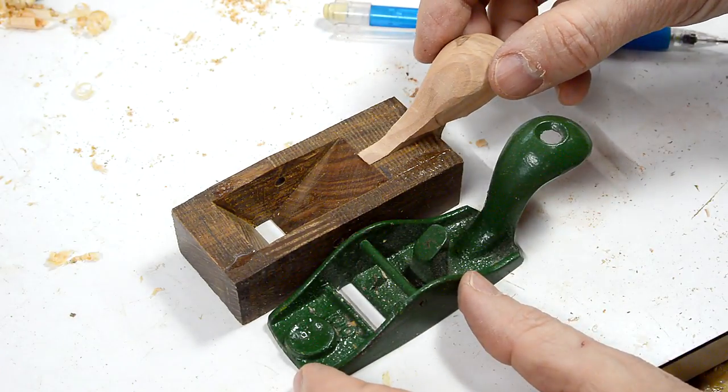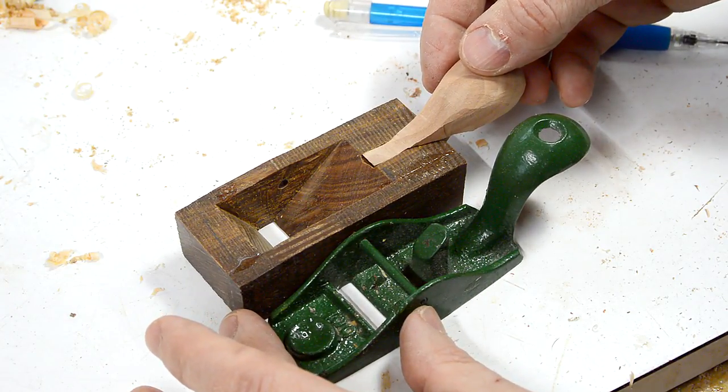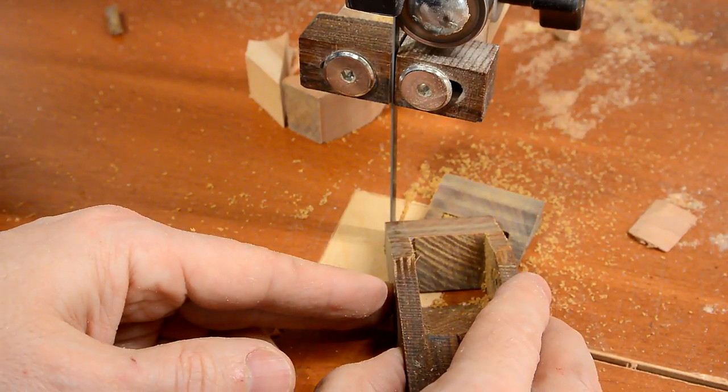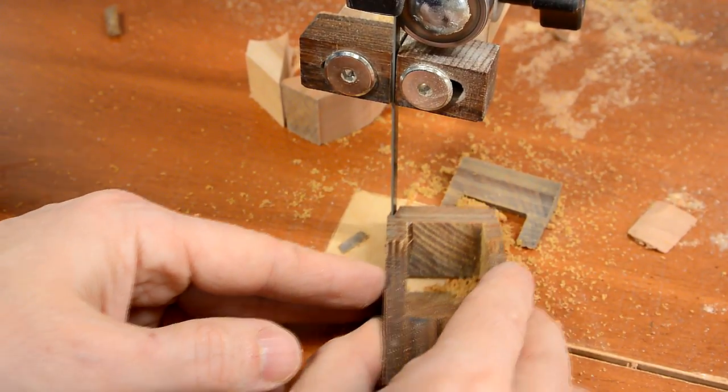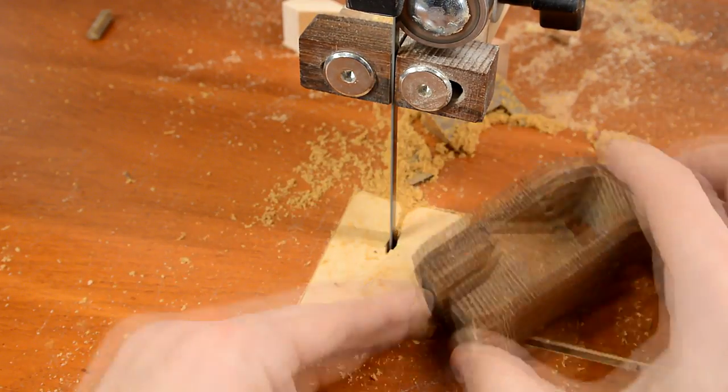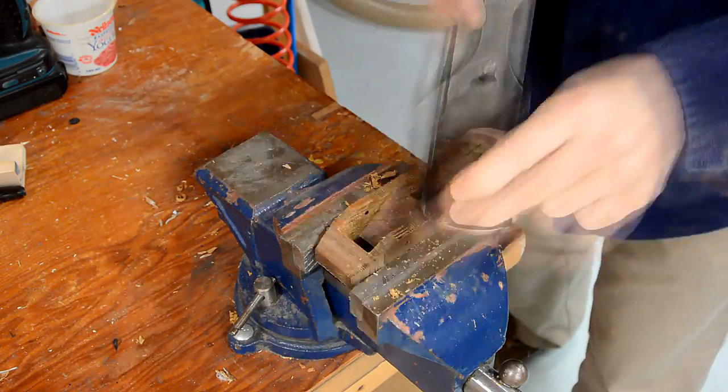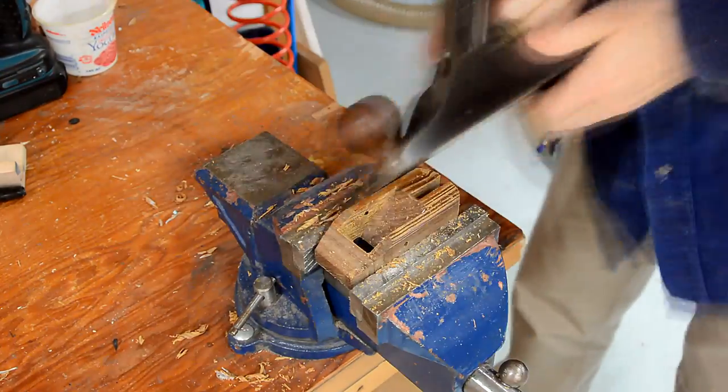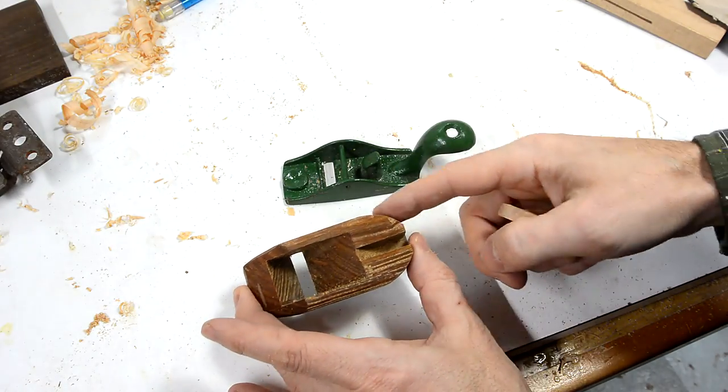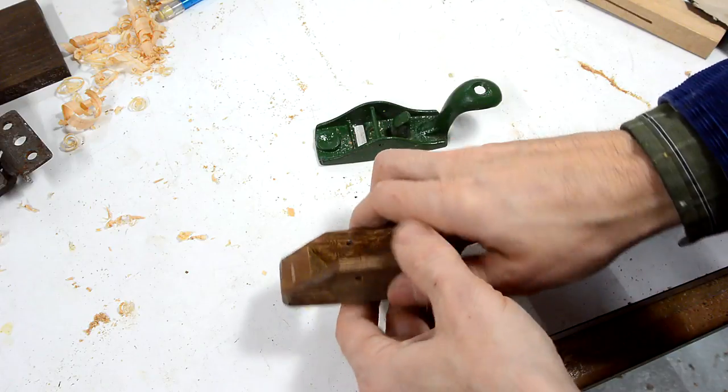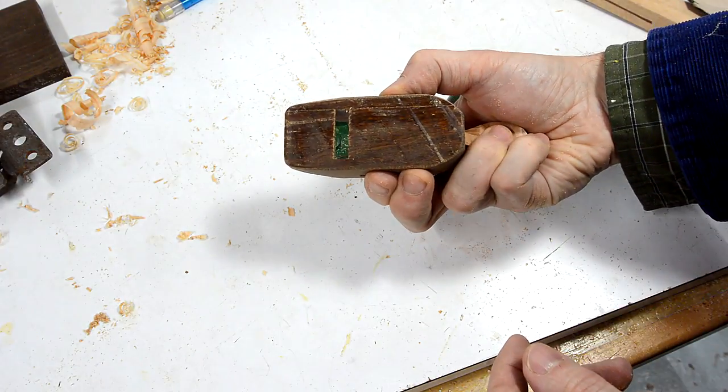Now before I glue this on, I'll just trim the rest of this plane to be a little bit more comfortable to hold. I ended up tapering it in the back quite a bit, because the way I hold this one is usually like this. So if I wanna hold this one, I need a bit of space for my fingers to go right here.